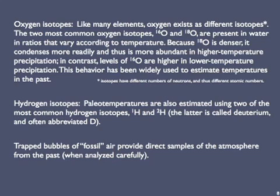Hydrogen is another element with isotopes that are useful to the paleoclimatologist. Almost all hydrogen is H1, but one out of every 6,400 atoms of hydrogen is H2, called heavy hydrogen, or deuterium — often abbreviated as capital D. Scientists are able to estimate paleotemperatures using these two isotopes for the same density-related reasons as in the oxygen isotopes. Besides elemental isotopes, ice also contains trapped bubbles of fossil air that provide direct physical samples of the atmosphere of the past. Climatologists have learned how to avoid problems with leakage out of those bubbles or contamination by younger air.